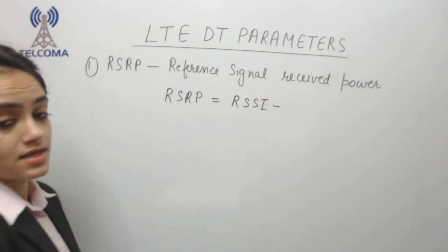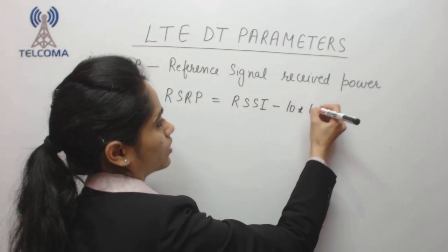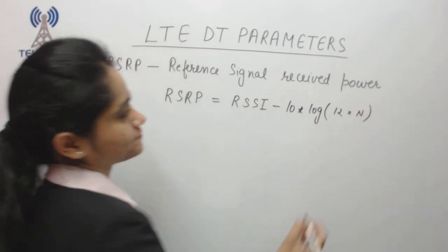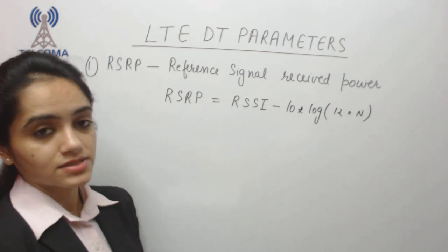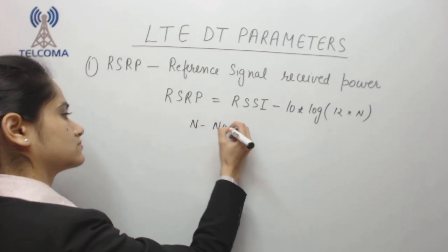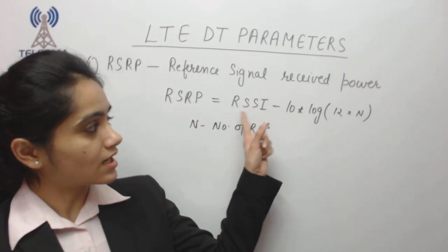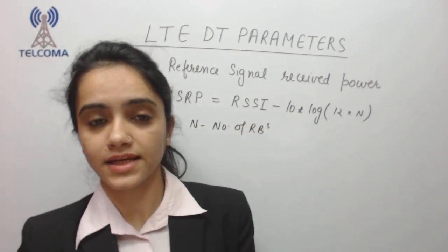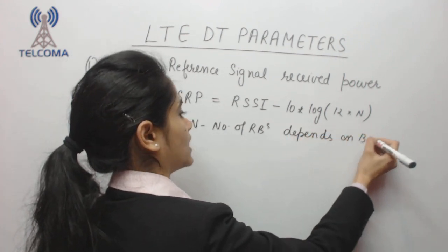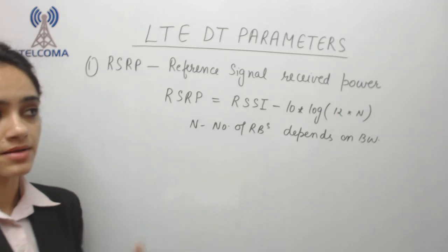RSRP is calculated as: reference signal intensity minus 10 multiplied by the logarithm, specifically minus log of 12 into n. In this formula, n is the total number of resource blocks across which RSSI is measured, and it totally depends upon bandwidth — more bandwidth means more resource blocks.